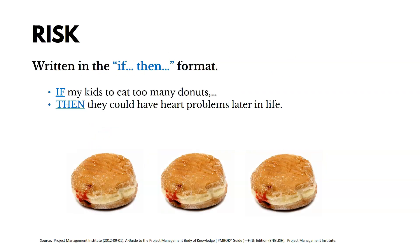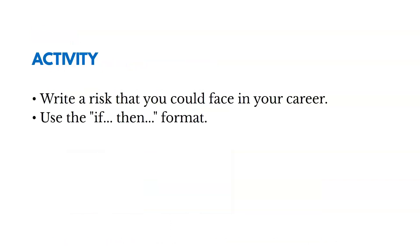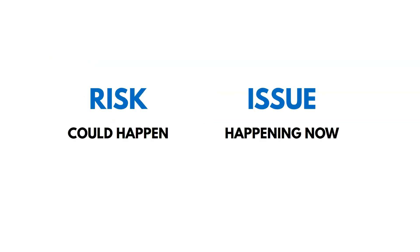Here's an example of how we write risks — we use the if-then format, which makes it easy to understand what the risk is and what the consequence would be. For example: if my kids eat too many donuts, then they could have heart problems later in life. You might want to pause the video and write a risk you could face in your career using the if-then format. Note that a risk is something that could happen, while an issue is something that's happening right now.